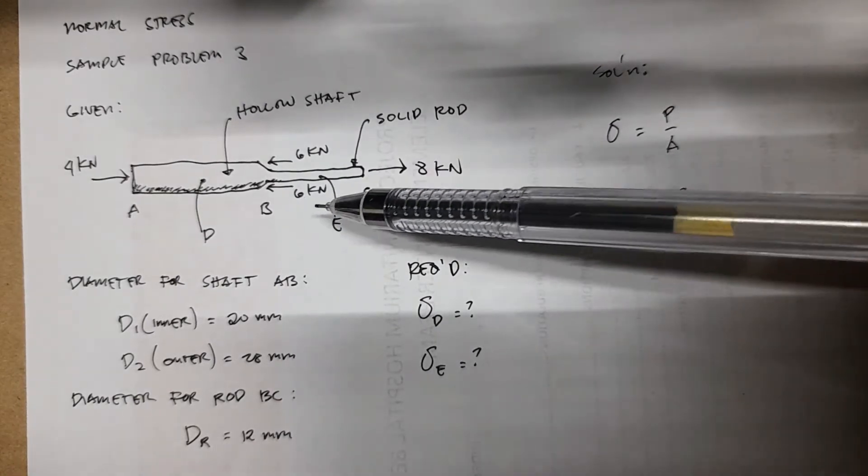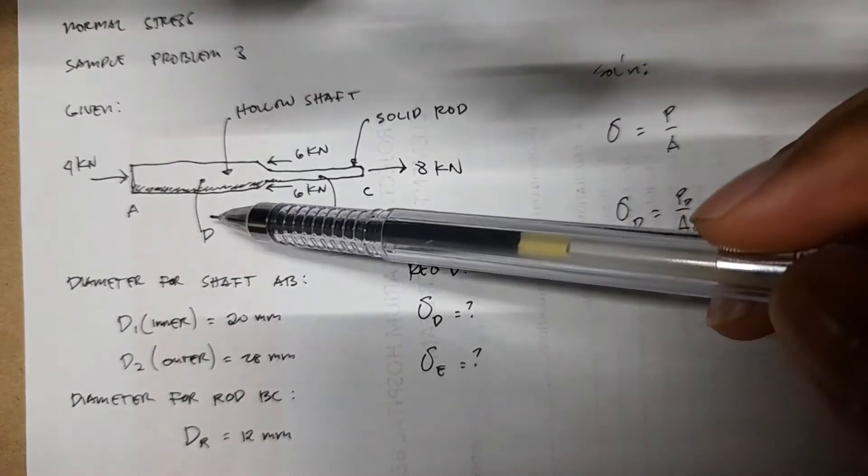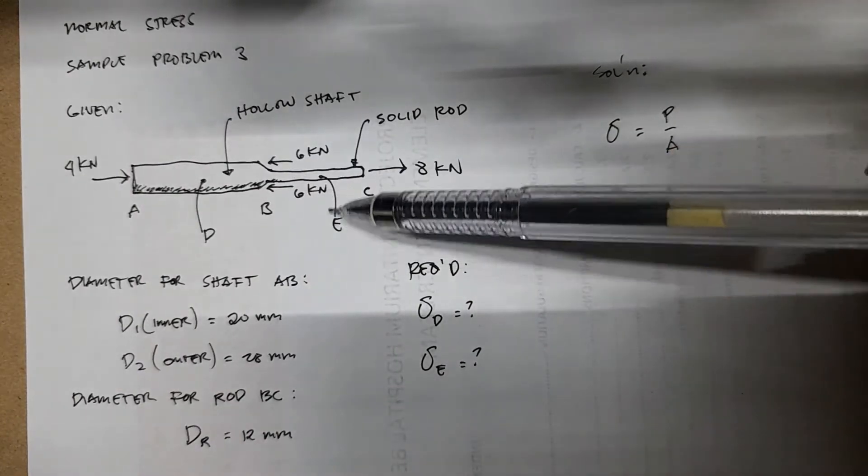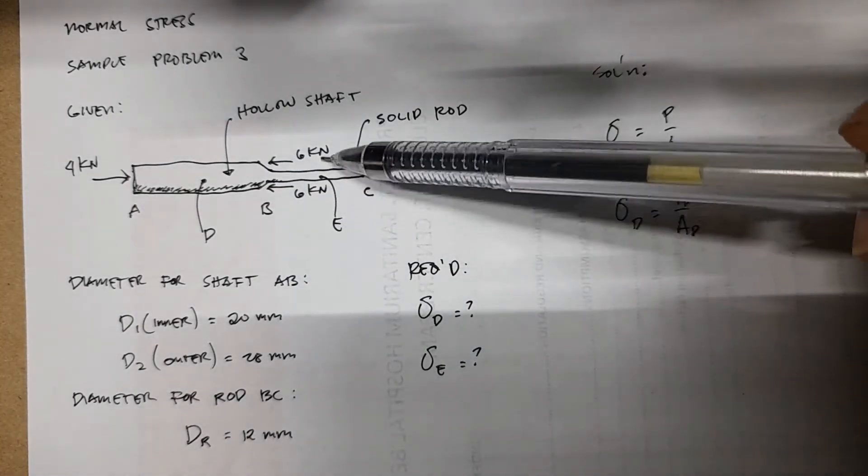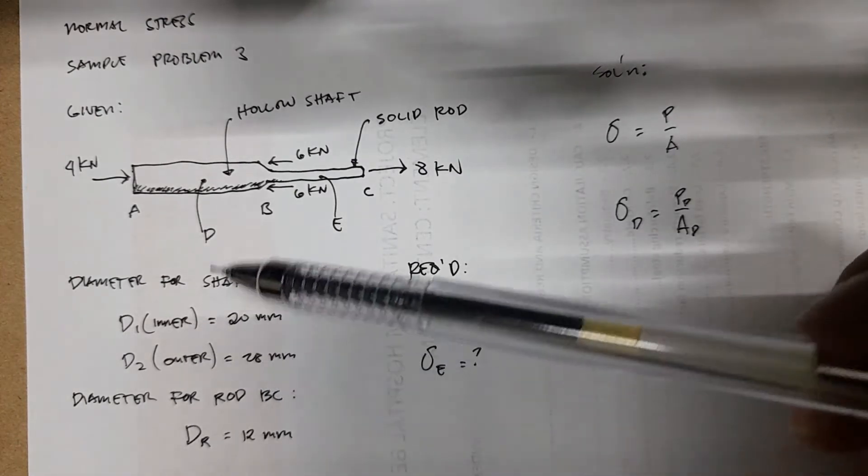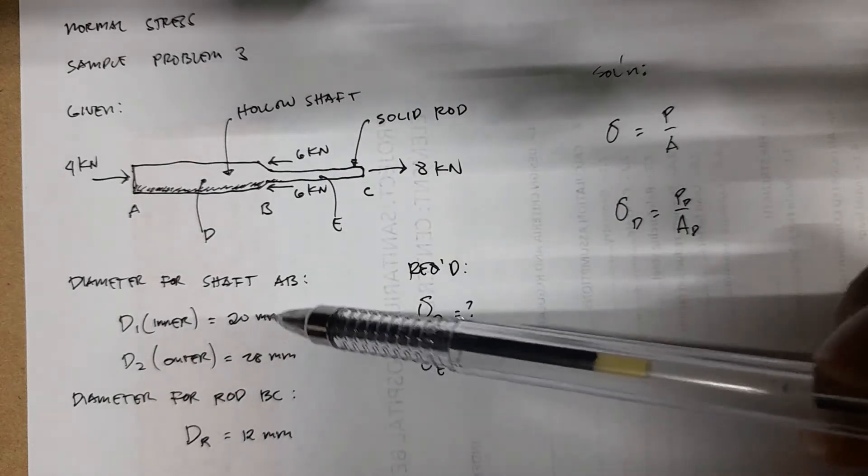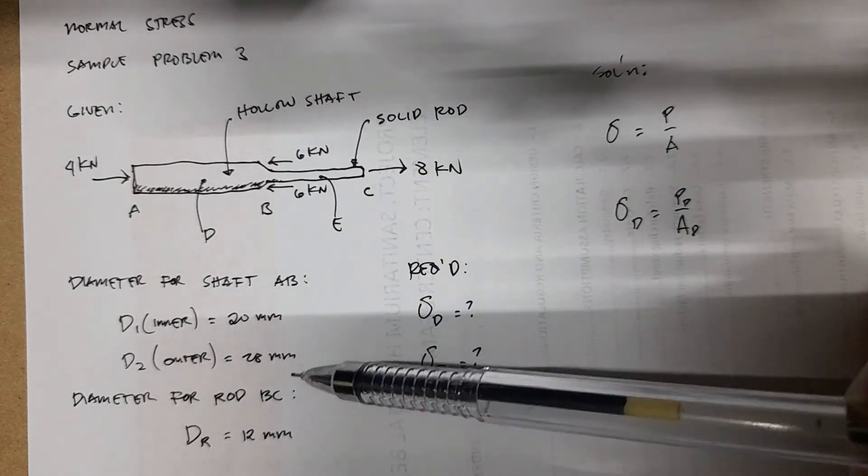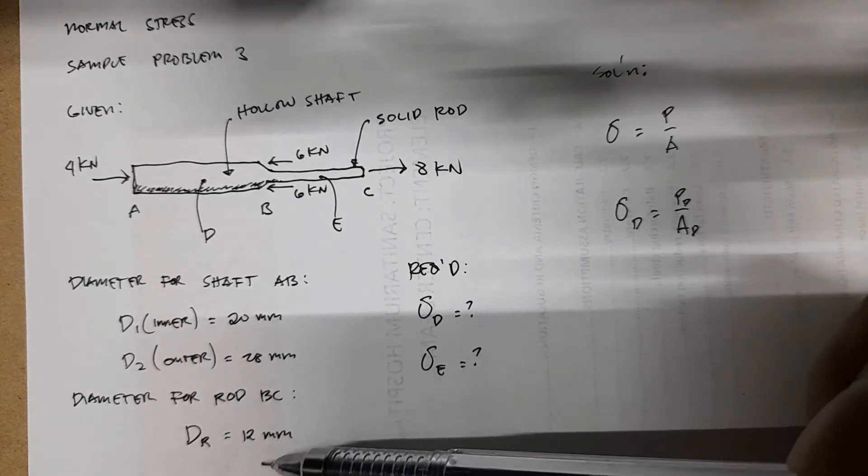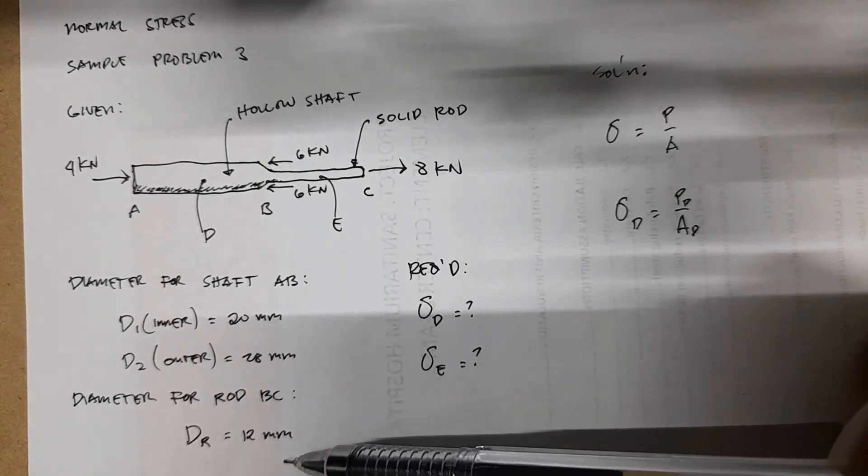We're asked here to find the normal stress at point D, this section, and point E, which is at this section. Also given are the diameters for the inner and outer diameters of the hollow shaft, 20 mm and 28 mm, and the diameter of the solid rod, which is 12 mm.